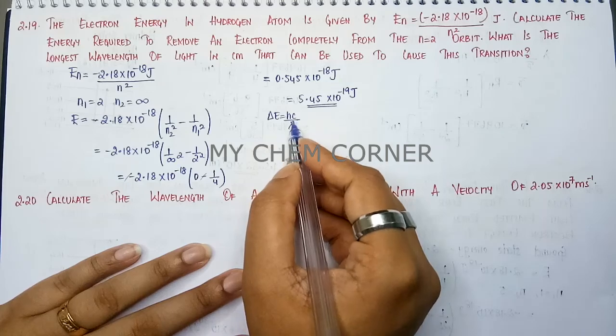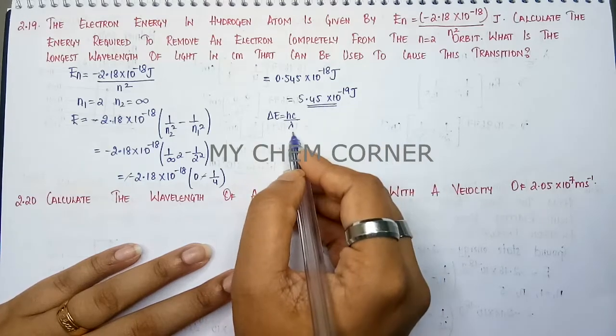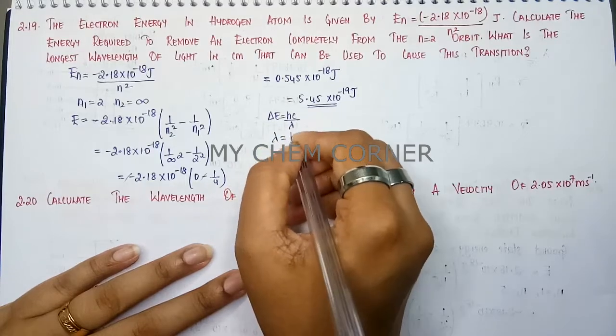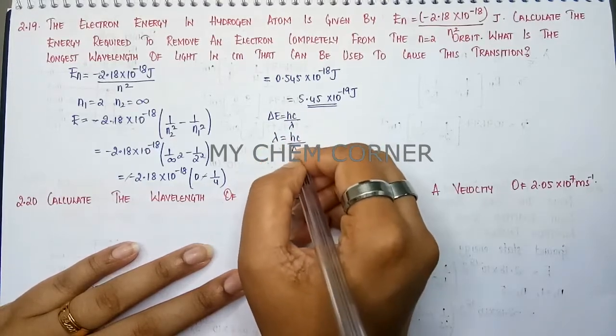H and C are constant. Delta E you just found out. You need to find out what is lambda. So in that case, rearrange your formula. Lambda equals HC by delta E.